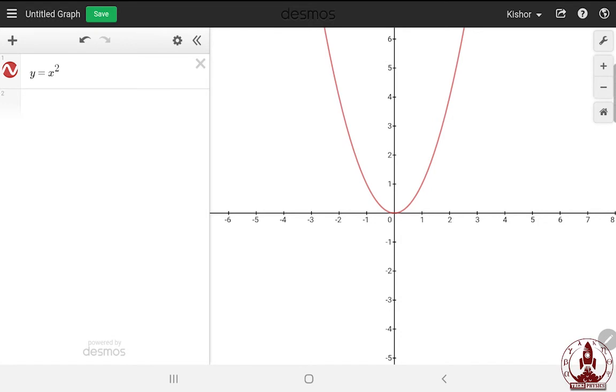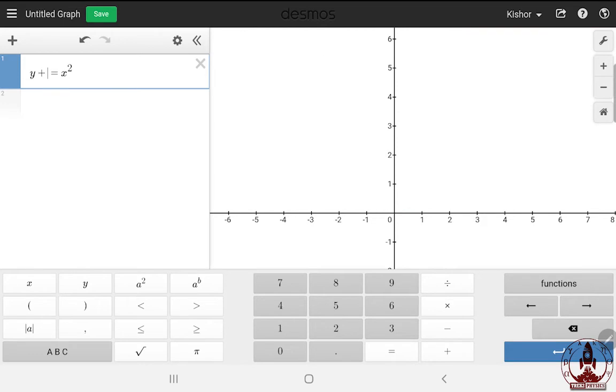So, according to rule number one, if I add any constant, let's say 1 with Y, the function lego should move one step downward. And it does.